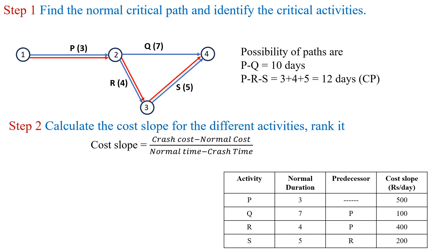Step 2 is to calculate the cost slope for the different activities and assign ranks. The general formula for cost slope is: crash cost minus normal cost divided by normal time minus crash time. Here, the cost slope values are already given in the data, so we only need to rank them. The minimum value is 100 for activity Q, so we give rank 1 to activity Q.